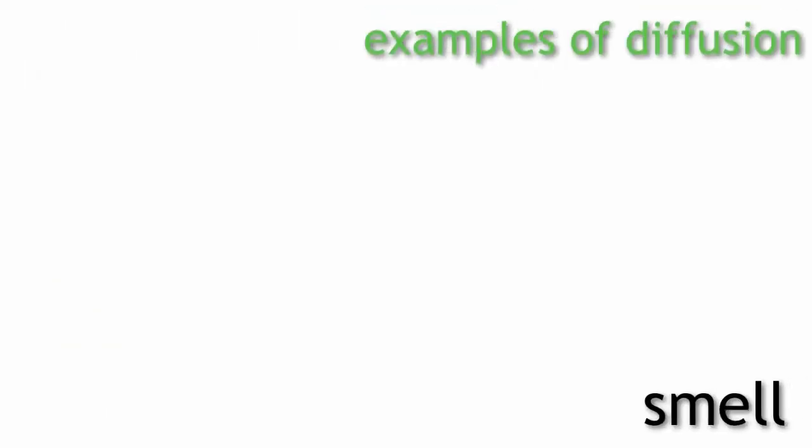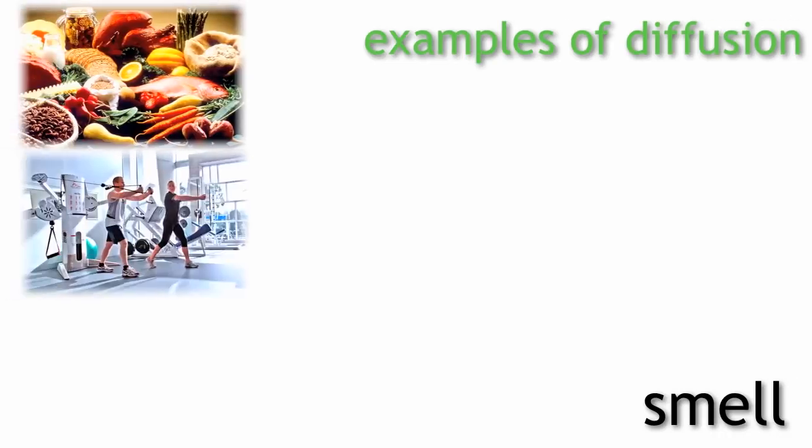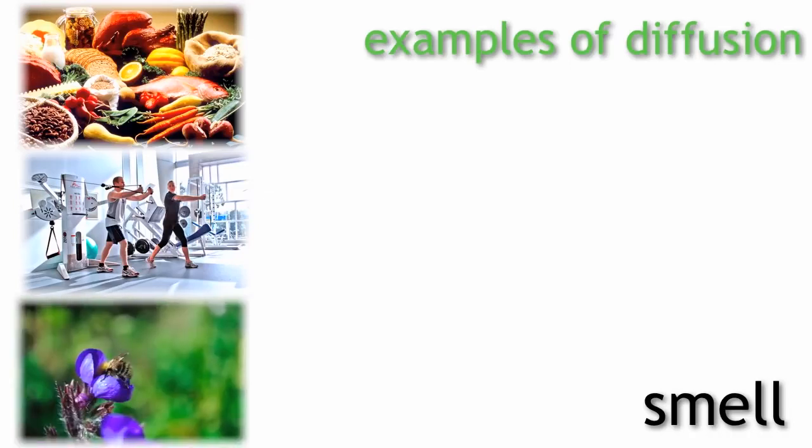Now, there are many examples of diffusion, but smell is probably the most obvious one. These could be food smells, body smells from other people, the scent that a plant gives off to attract pollinating insects.